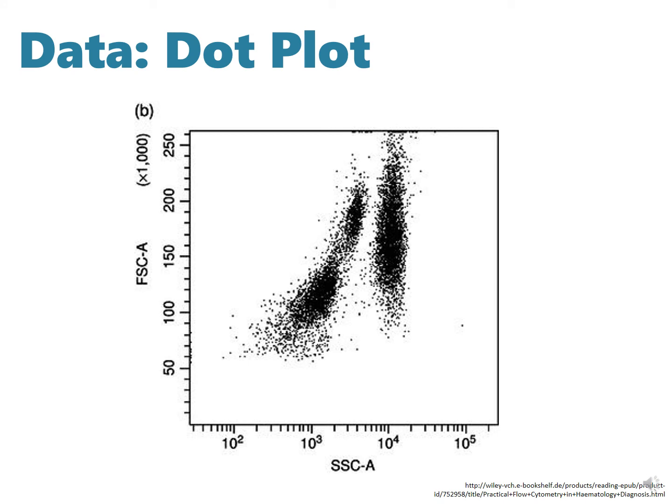In this diagram, we see a signal with side scattering versus the forward scattering for the distribution of blood. These are lymphocytes, granulocytes, and monocytes which are not relevant here, but we can see them better in the next figure.